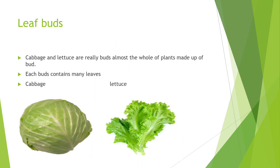Now we will see how leaf buds look. Cabbage and lettuce are leaf buds — almost the whole plant is made up of buds, and each bud contains many leaves. They are called leaf bud vegetables. We also eat cabbage and lettuce, which we use in salad.